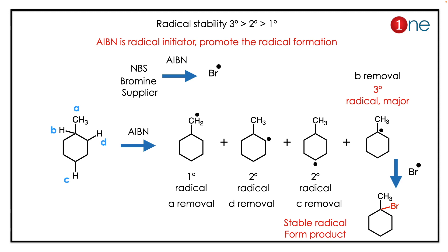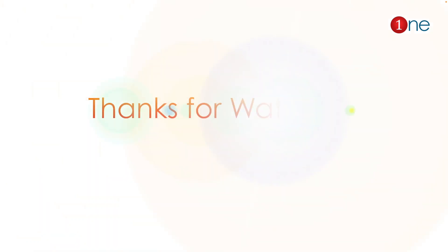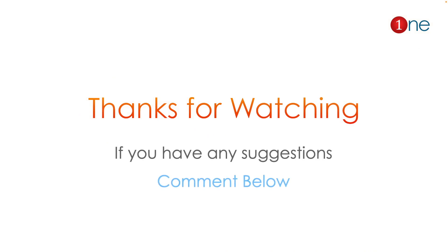Removing 'c' gives a secondary radical, and removing 'b' gives a tertiary radical. Since tertiary radical is more stable, the major product will form via the tertiary radical. So bromine substitution occurs at the tertiary carbon of the side chain. The key concept: AIBN is a radical initiator, and the most stable radical forms the major product. Thanks for watching.